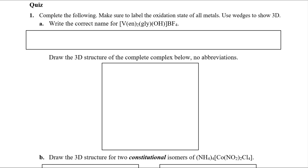This first one is really just a review problem — a naming question. We've got vanadium, some ethylenediamine, and by now you really need to know what these ligands are. One of the first handouts listed all the ligands you need to know. We've added a couple since, but those are the main ones. Glycinate becomes glycinato, hydroxide becomes hydroxo, and tetrafluoroborate is the counter ion — a very common anion with a negative one charge — which means the complex in brackets has a net positive charge.